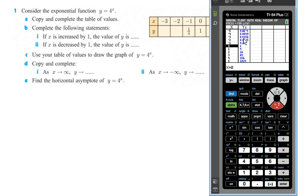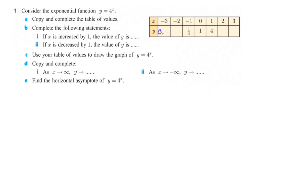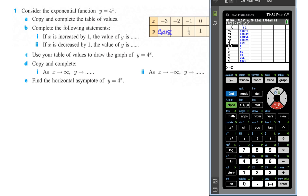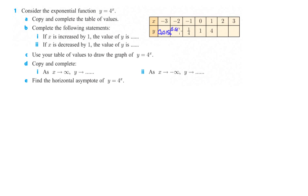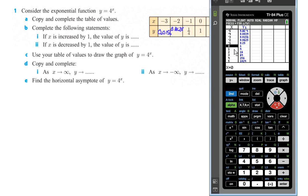So negative 3 is 0.0156. And then we can look on there for negative 2 and that's 0.0625. Those are all 0s except for that's a 6. And then we just need 2 and 3. 2 is 16 and 3 is 64.